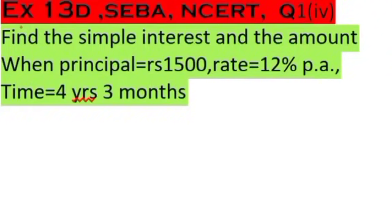Here is question number one, Exercise 13D, NCERT math book, question 1.4: Find the simple interest and the amount when principal is equal to rupees 1500, rate is equal to 12 percent, and time is equal to four years three months. First, let's note the information provided — principal, rate percent, and time are given, and we have to find simple interest and amount.